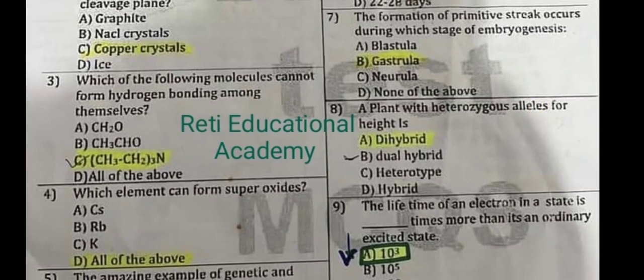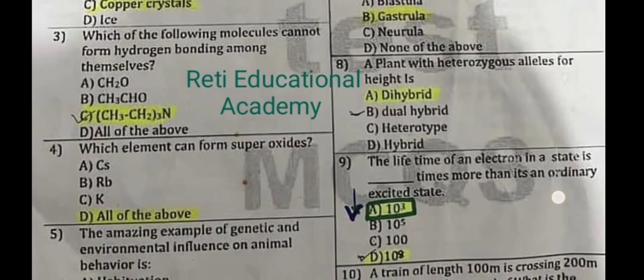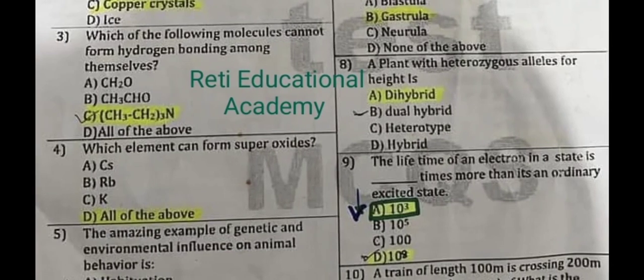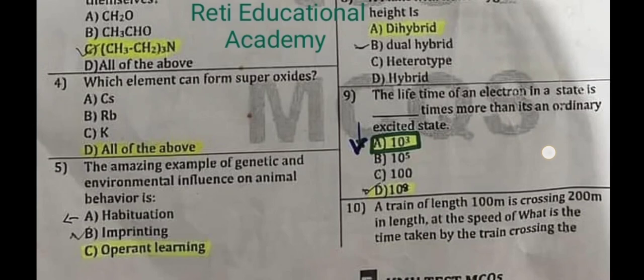Question number 8: A plant with heterozygous alleles for height is dihybrid. Question number 9: The lifetime of an electron in a state is how many times more than in an ordinary excited state? The correct answer is A: 10³. Question number 10: A train of length 100 meters is crossing a bridge 200 meters in length.